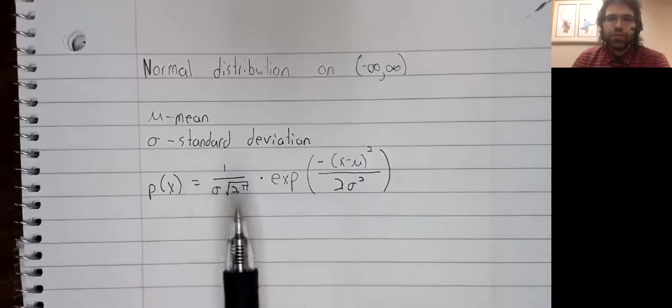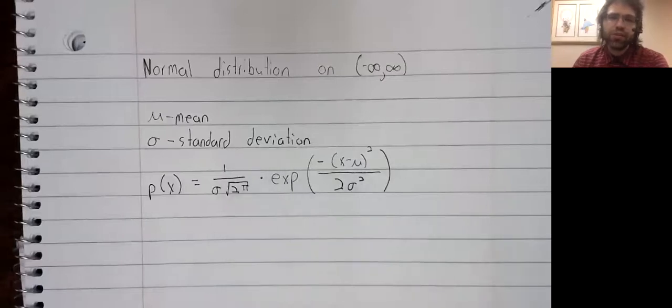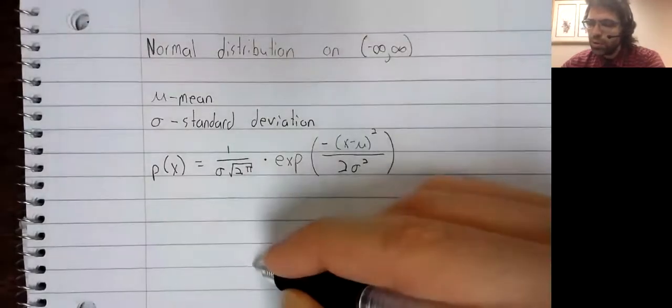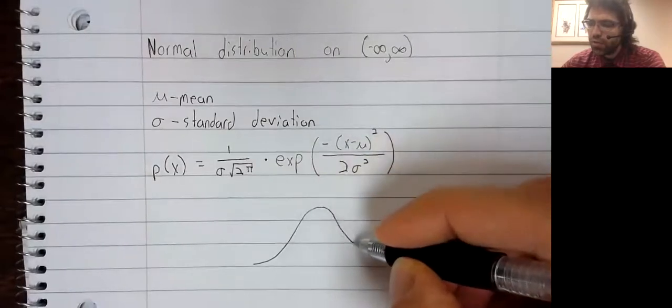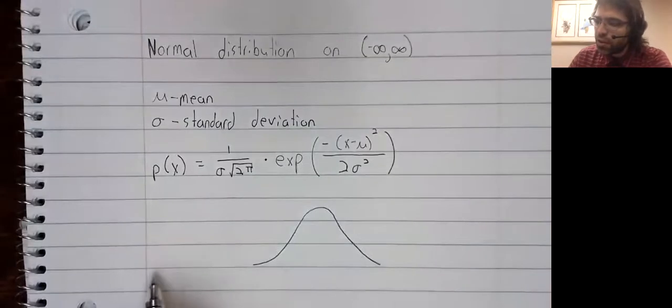If you graph p of x with some value of sigma and mu, you get a curve that looks like that.